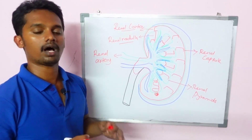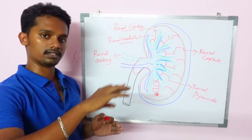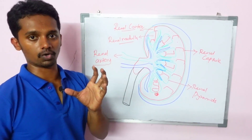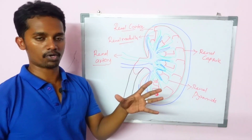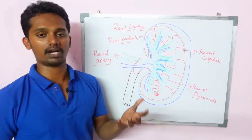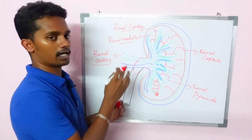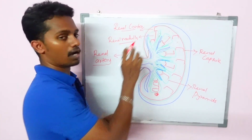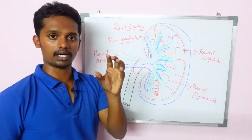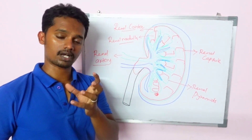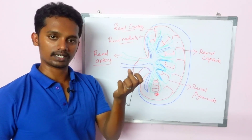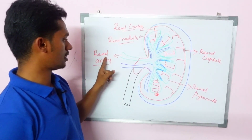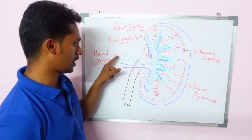Looking at these parts, we have the renal artery. Artery means oxygenated blood is supplied to our kidney. So through the renal artery, there is pure oxygenated blood. Where does the urine come from? In the blood, there is excess water. This is filtered to form urine. The renal artery branches down, and there is an afferent arteriole which leads to the glomerulus. In the glomerulus, blood is filtered and urine formation begins.